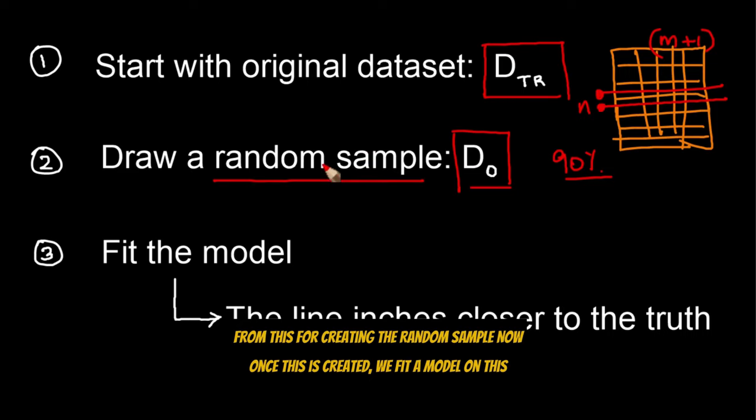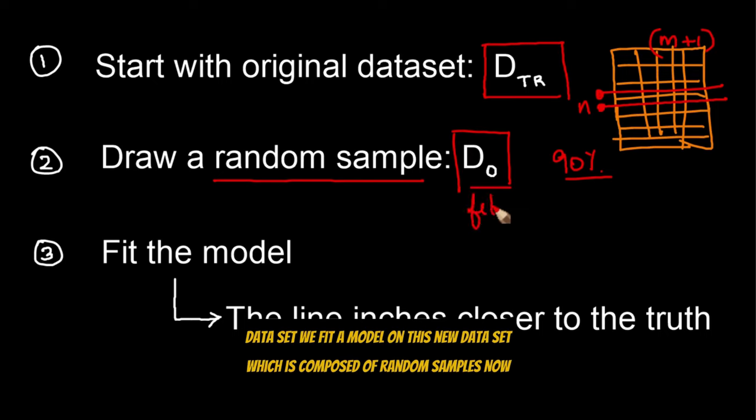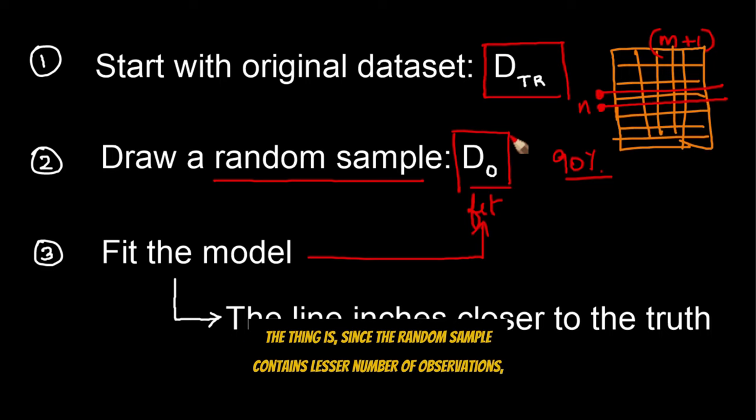That many rows are picked from this for creating the random sample. Now once this is created, we fit a model on this data set, we fit a model on this new data set which is composed of random samples. Now the thing is, since the random sample contains lesser number of observations, the chance or the number of outliers that will occur in this data set will be considerably lower than the original training data set.